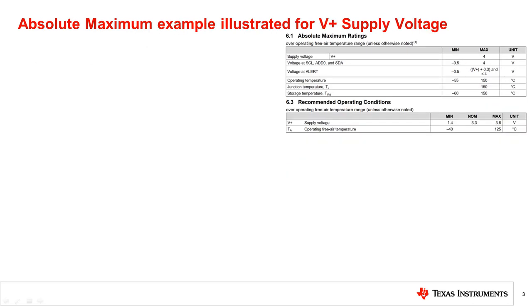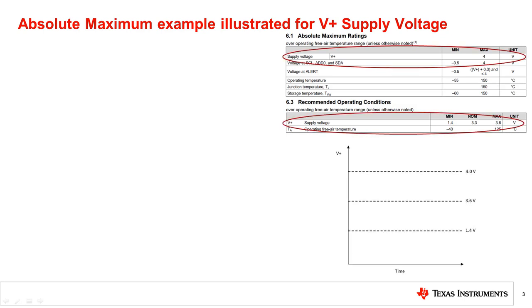To better understand the concept of absolute maximum and recommended operating conditions, let's look at the example a bit more closely. We will take the example of the supply voltage specified here as V+ on the operation of the device. In the first case, the device is operating in the recommended operating range of 1.4 volts to 3.6 volts. Under the circumstances, the electrical specifications provided in the datasheet shall be met.